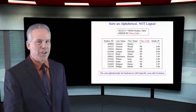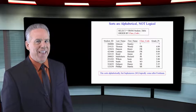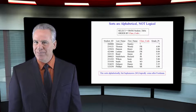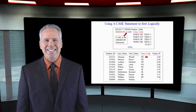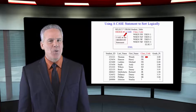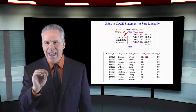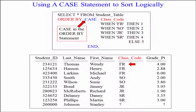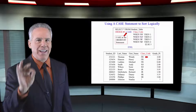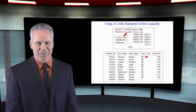Freshman, sophomore, junior, senior, and then the null. Could you do it? This is how it's done. I'm going to ORDER BY, and then use a CASE statement. As you can see, I've got the CASE — and there's always an END with every CASE — and I'm going to case the class code. When freshman, one. When sophomore, two. When junior, three. When senior, four. And else, five. It's going to sort it exactly like we want it to.